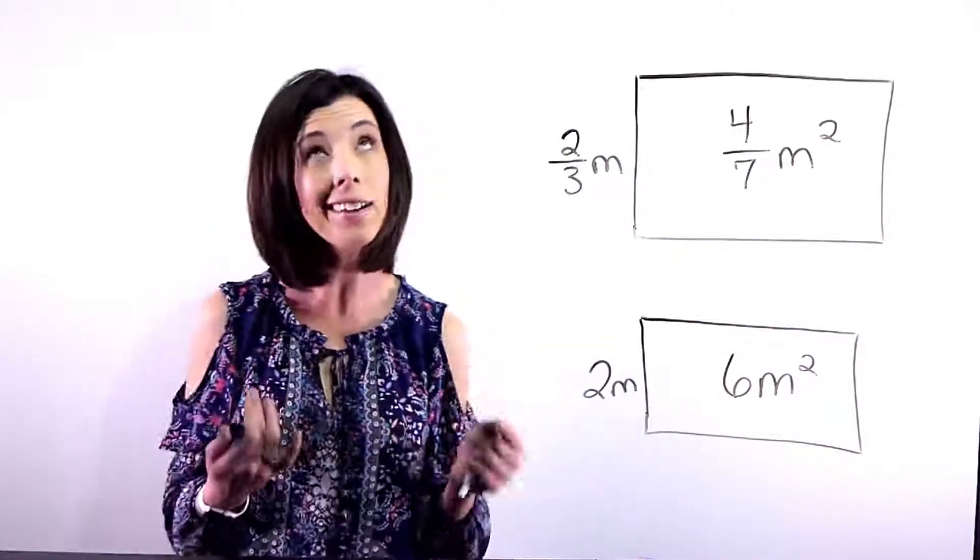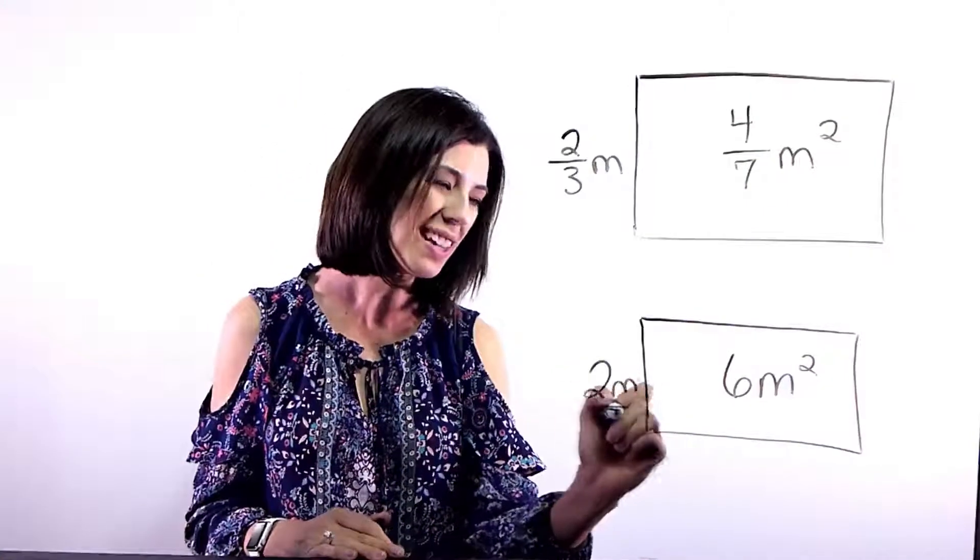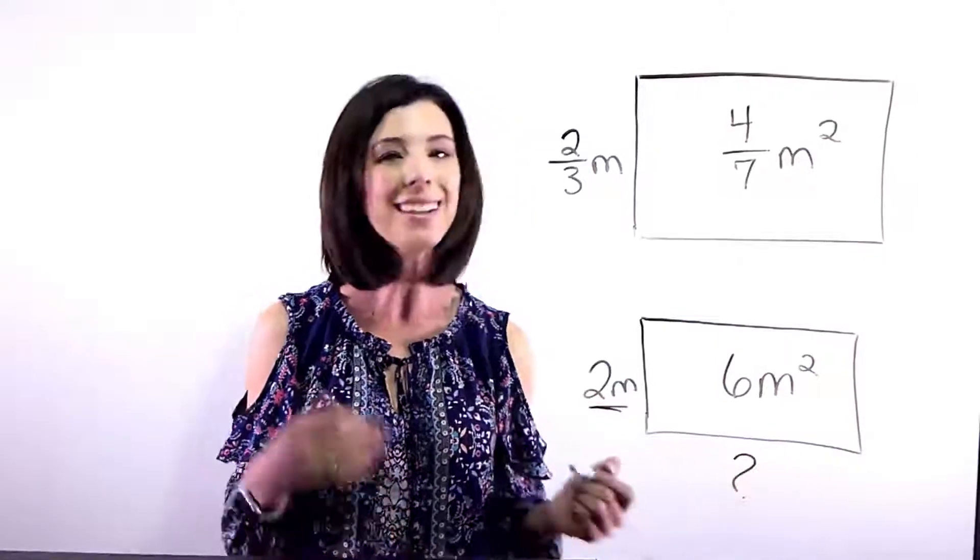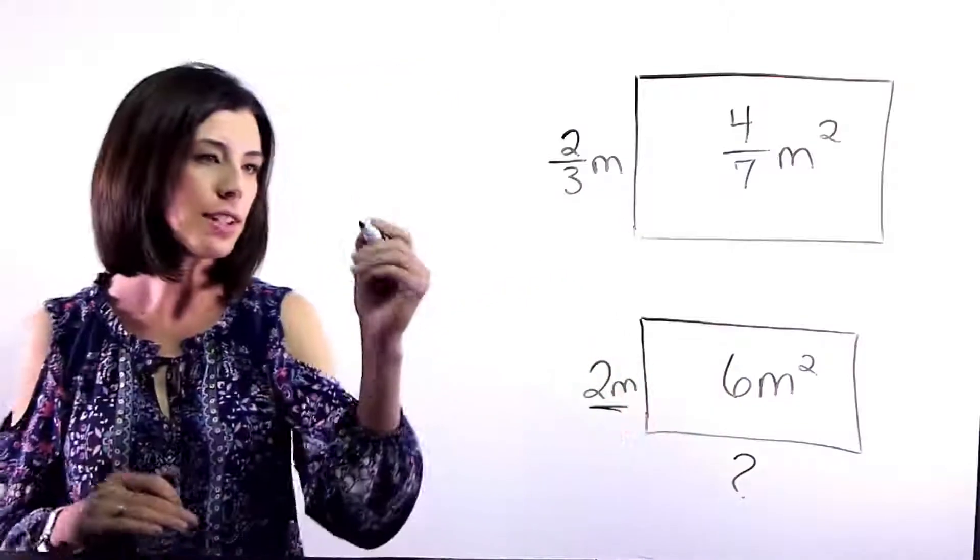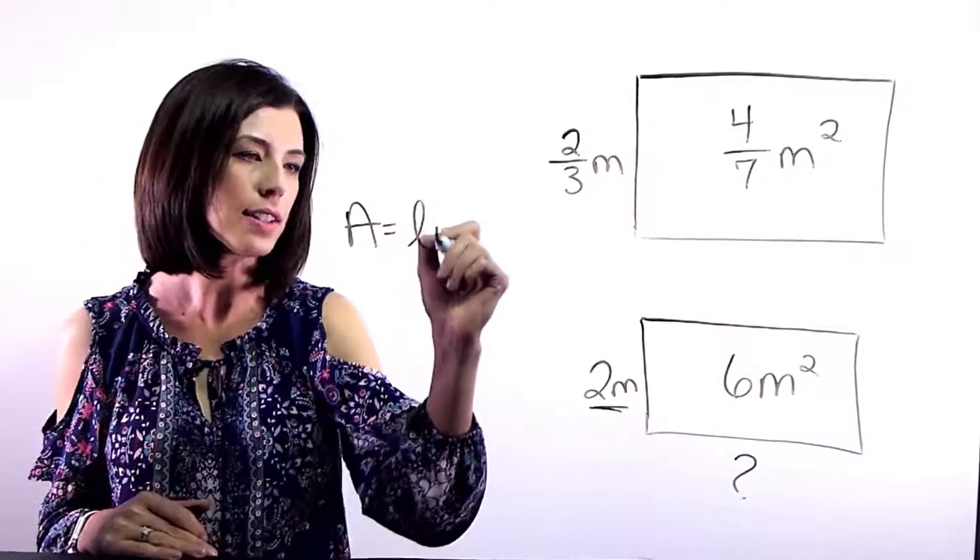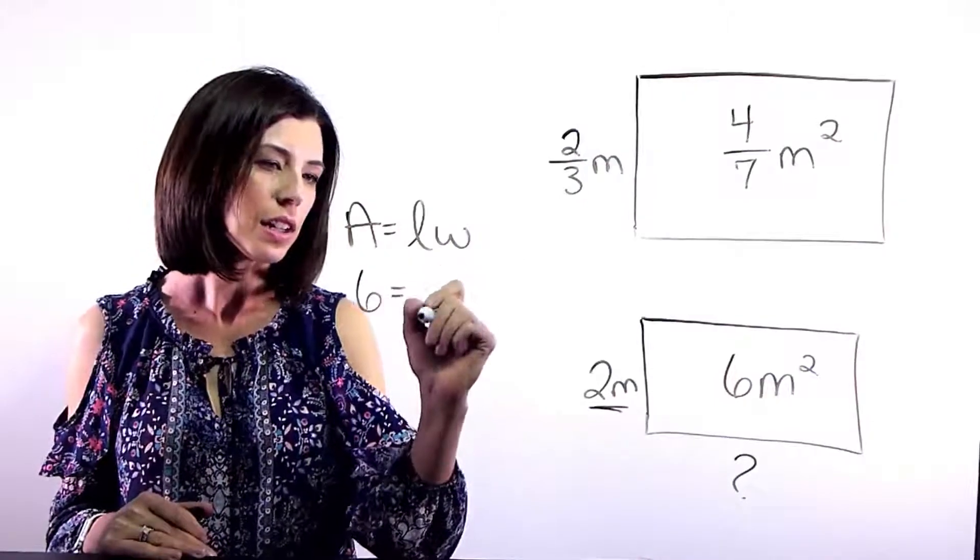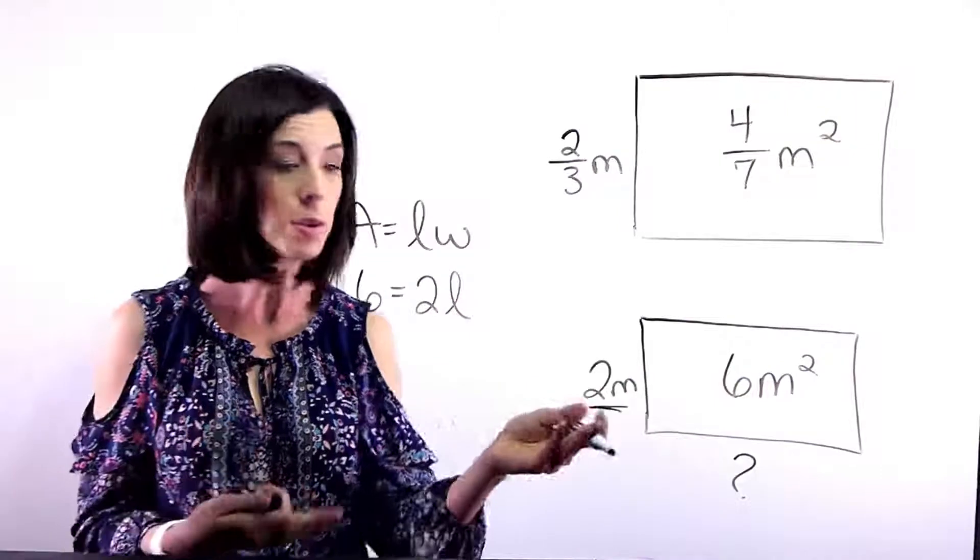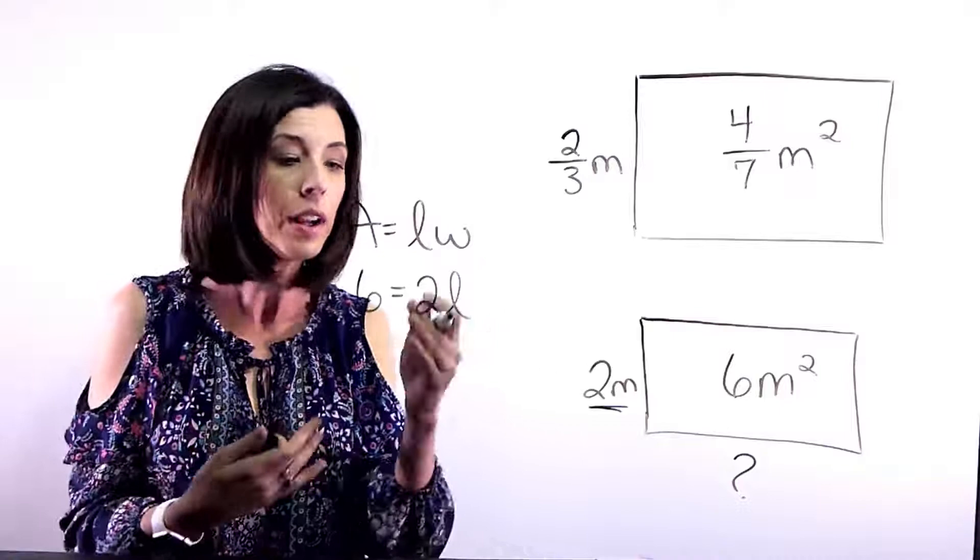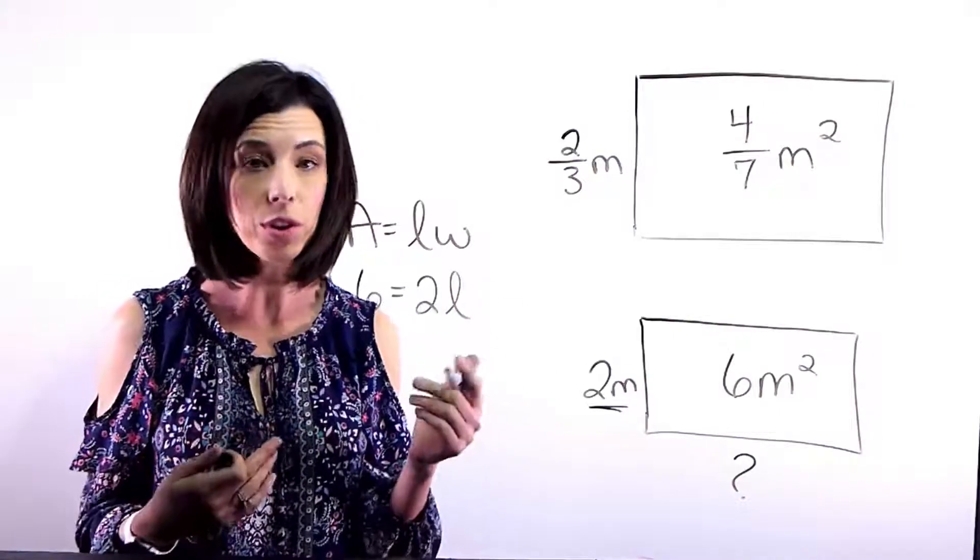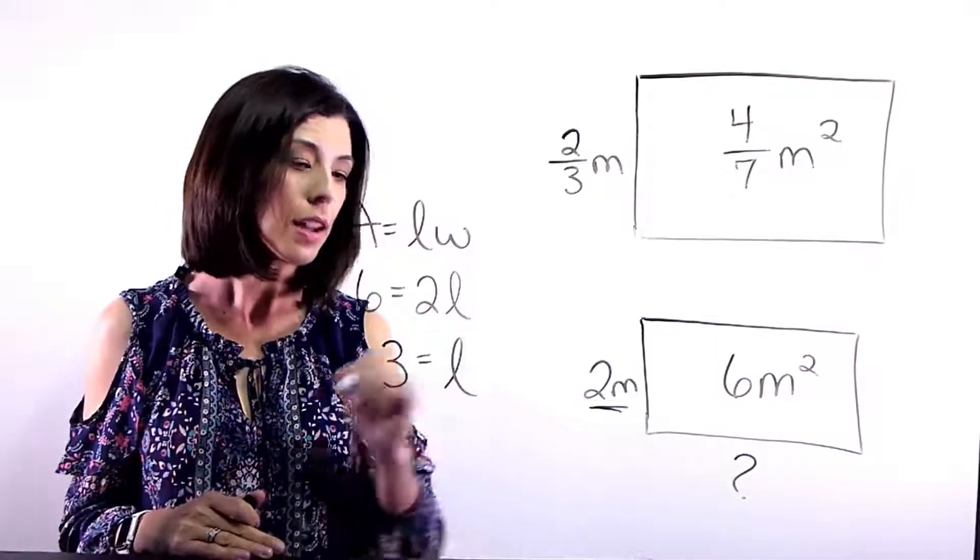Now right away I'm thinking area I know is length times width. So I see that I've got a width here, but what I don't know is the length. However, they give me the actual area. So if I'm thinking of this in terms of area is length times width, I can think that six is two times the length, right? Because two is our width in this case. I know that I can guess what number is going to be multiplied by two in order to get that six. And I know that three has to be the length.